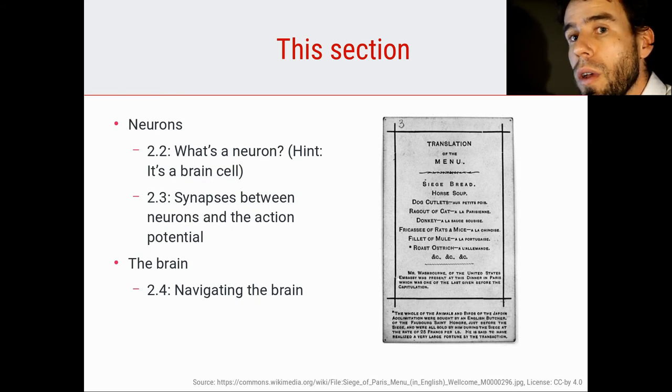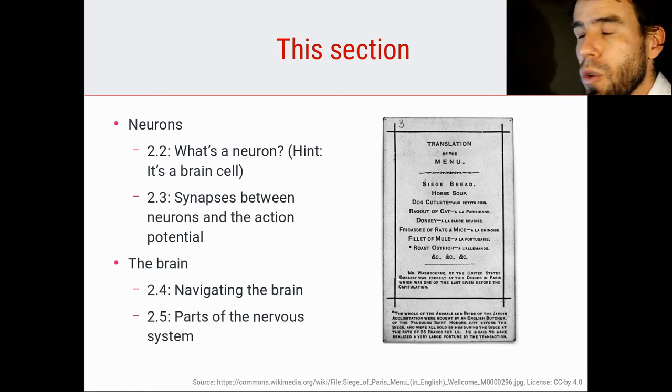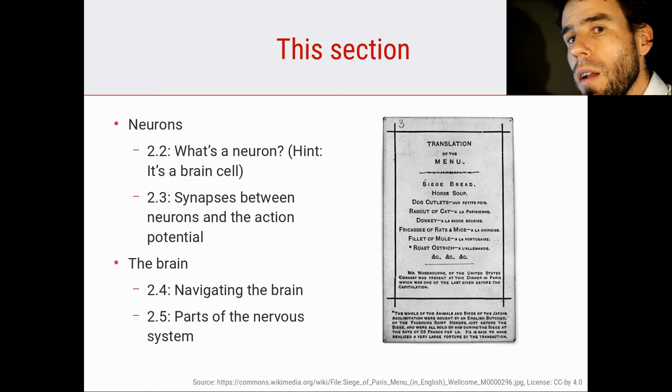So what kind of terms we use to describe what the front of the brain is and the back of the brain is, etc. And in 2.5, we're going to look at the major divisions of the nervous system, right? So the labels that we use to describe the different parts of the nervous system.